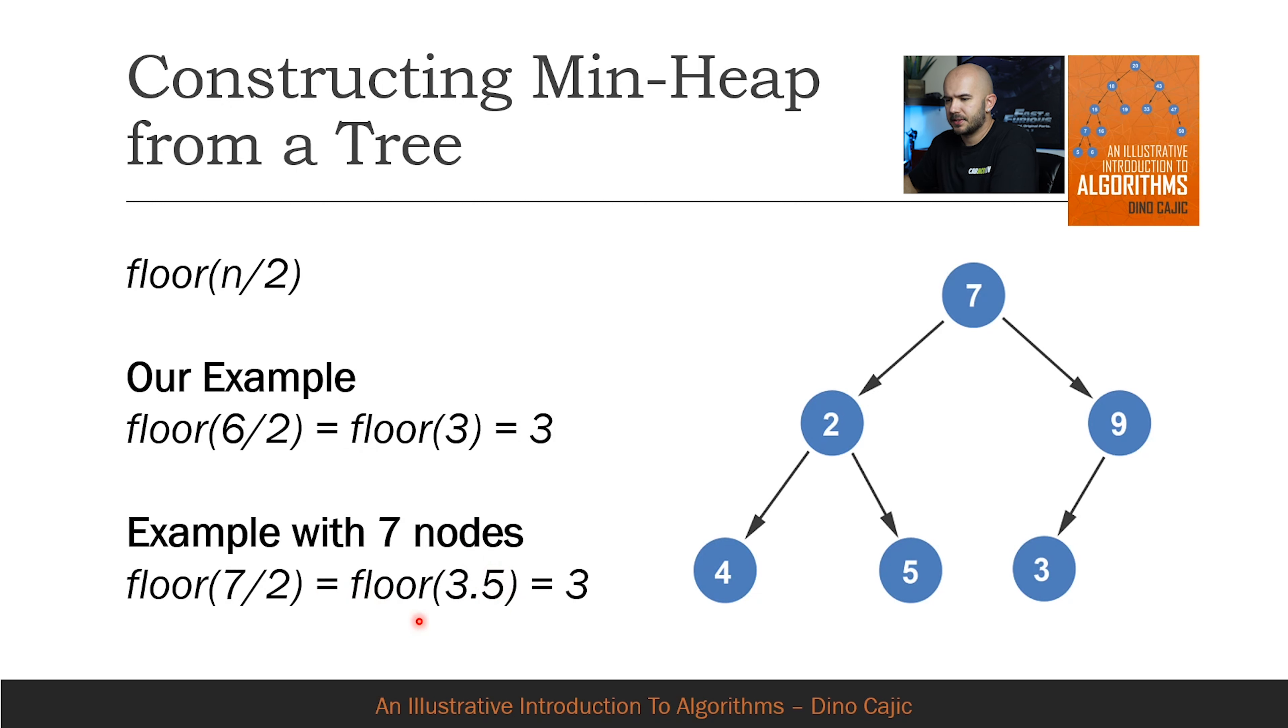If you don't know what floor is, it basically chops off any decimal point. So this could be 3.9999, once you floor it, it's going to be three. Same thing if it's 3.00001, if you floor it, it's going to chop it off and become three.